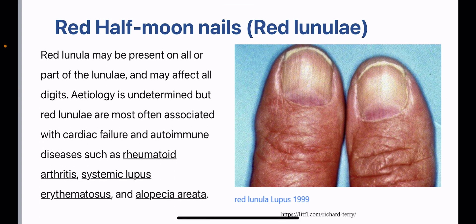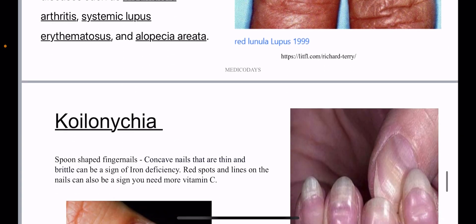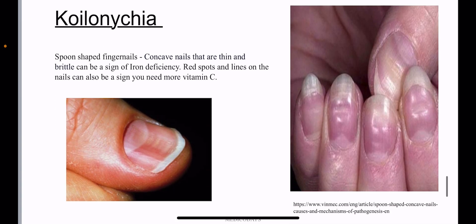Red half-moon nails, or red lunula, may be present on all or part of the lunula and may affect all the digits. The etiology is undetermined, but red lunula is most often associated with cardiac failure and autoimmune diseases such as rheumatoid arthritis, SLE, and alopecia areata.